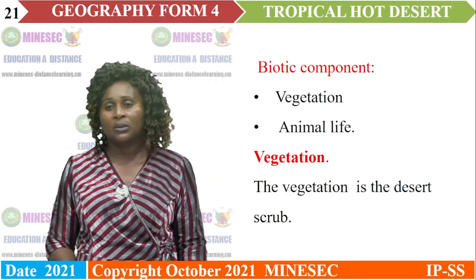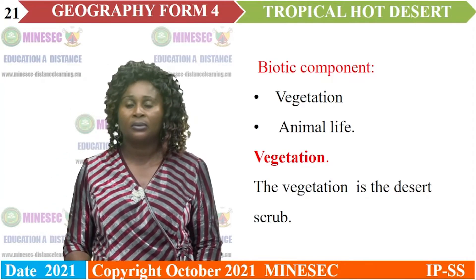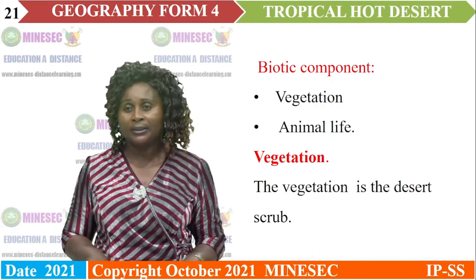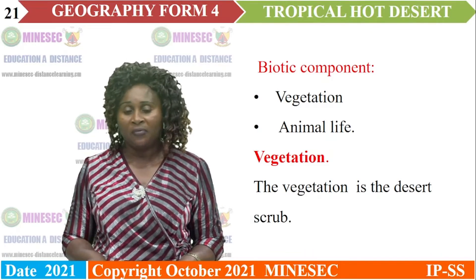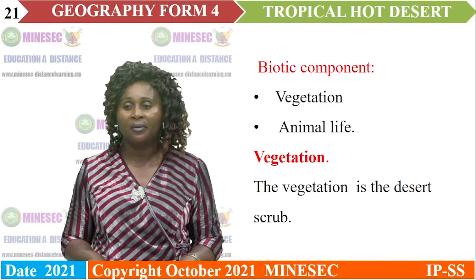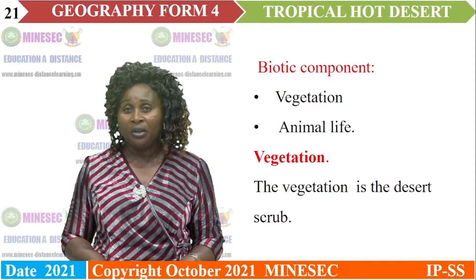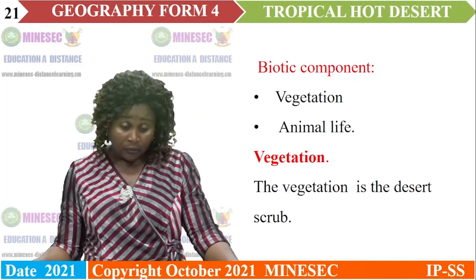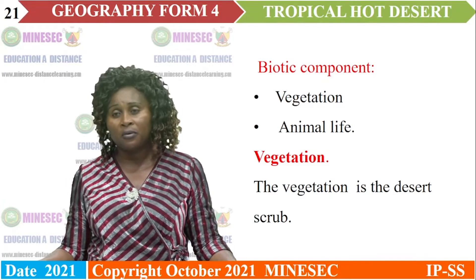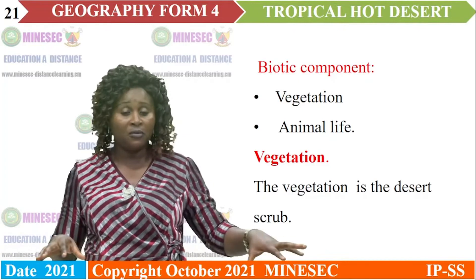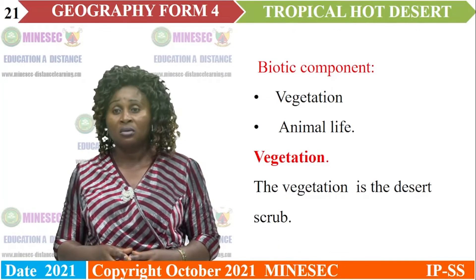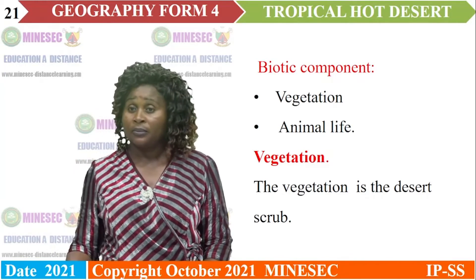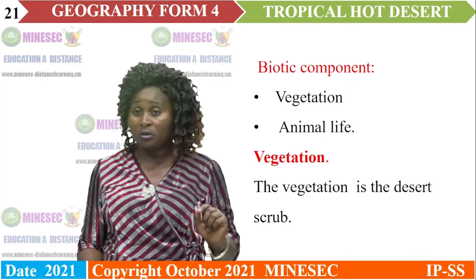The biotic components of the hot desert are the vegetation and animal life. The vegetation of the hot desert is scrub vegetation — made up of stunted grass interspersed with open spaces and very few species of trees.